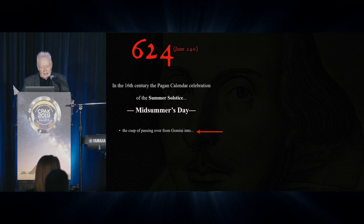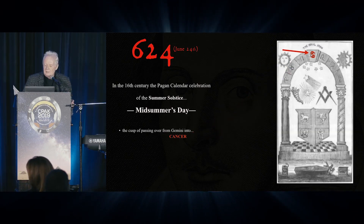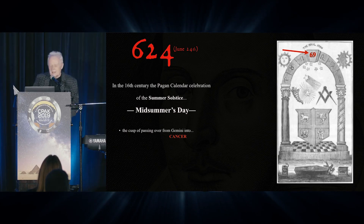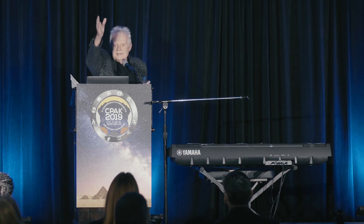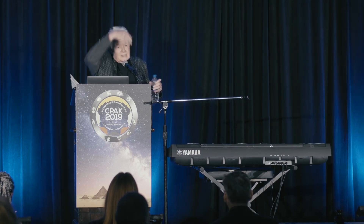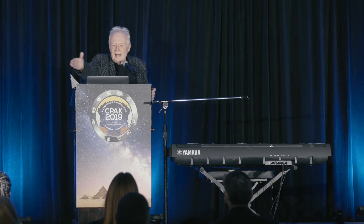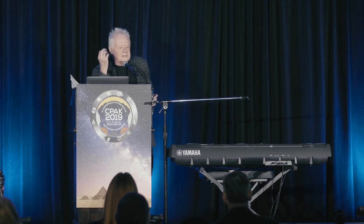Cusp of passing over from Gemini into Cancer — that's what the summer solstice is. When you look at the sun, it's rising at a certain point every morning, moving towards the longest day of the year in the northern hemisphere, and then it kind of screeches to a halt because it's going to start going back — relative to the way we perceive it. So what happens at the solstice?